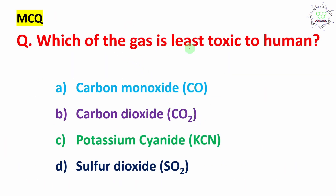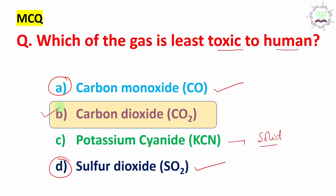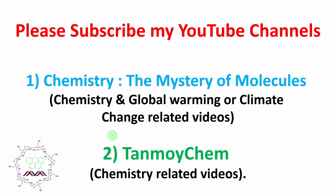Now back to our MCQ: which gas is least toxic to human? The answer is carbon dioxide. Carbon monoxide is extremely toxic even in very small amounts. Sulfur dioxide has comparable toxicity. Potassium cyanide is not a gas — it is a solid — so it's a dummy option. Therefore, option B, carbon dioxide, is the right answer. I request you to write your opinion in the comment box, because your opinion reflects your society and your society reflects the climate policy of your country. Thanks for watching. See you in my next video. Bye bye.